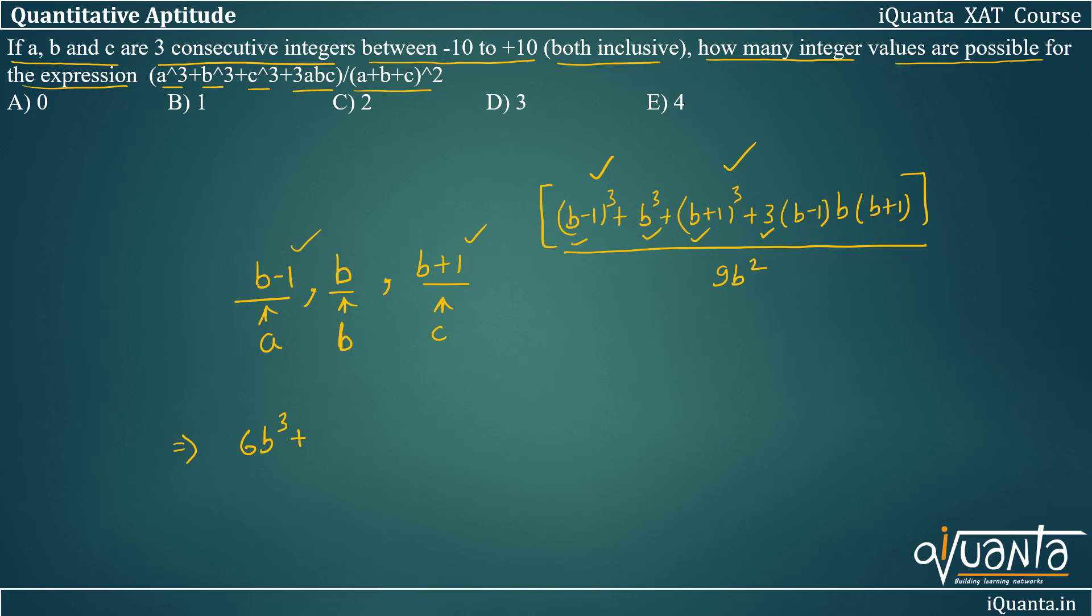Then from the first bracket, we'll be getting 3B and -3B². Then from this particular expression, we'll be getting +3B and +3B².